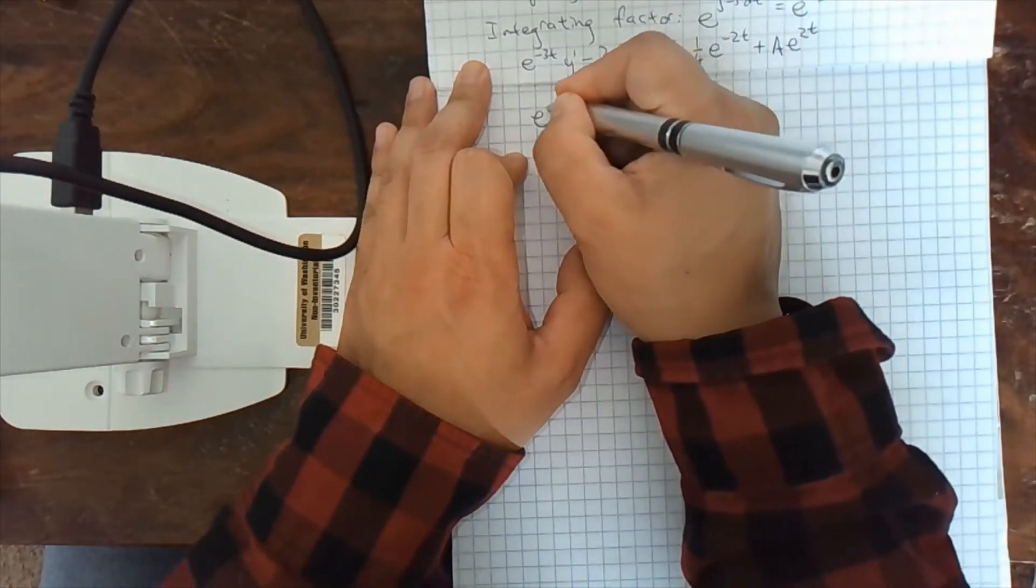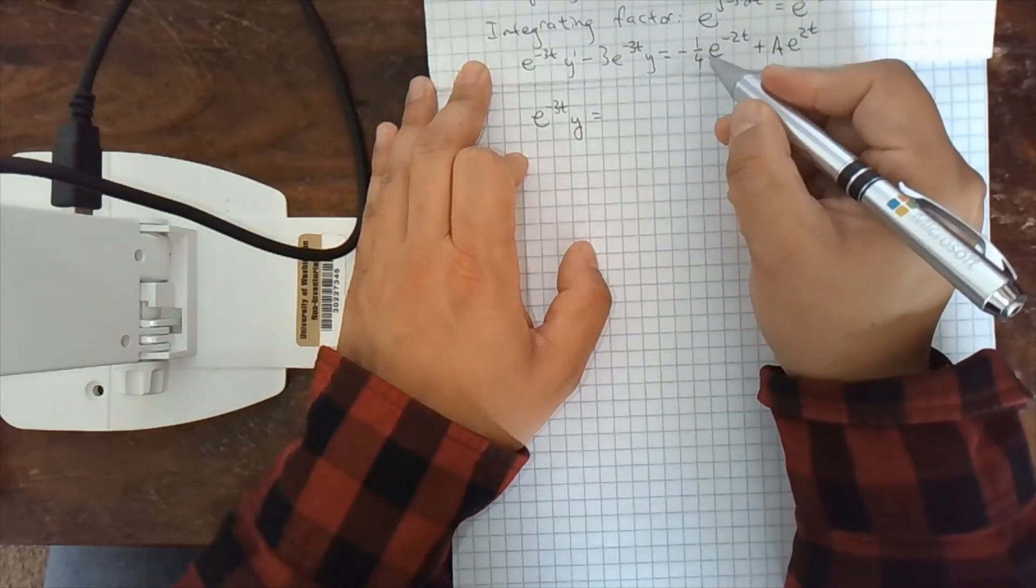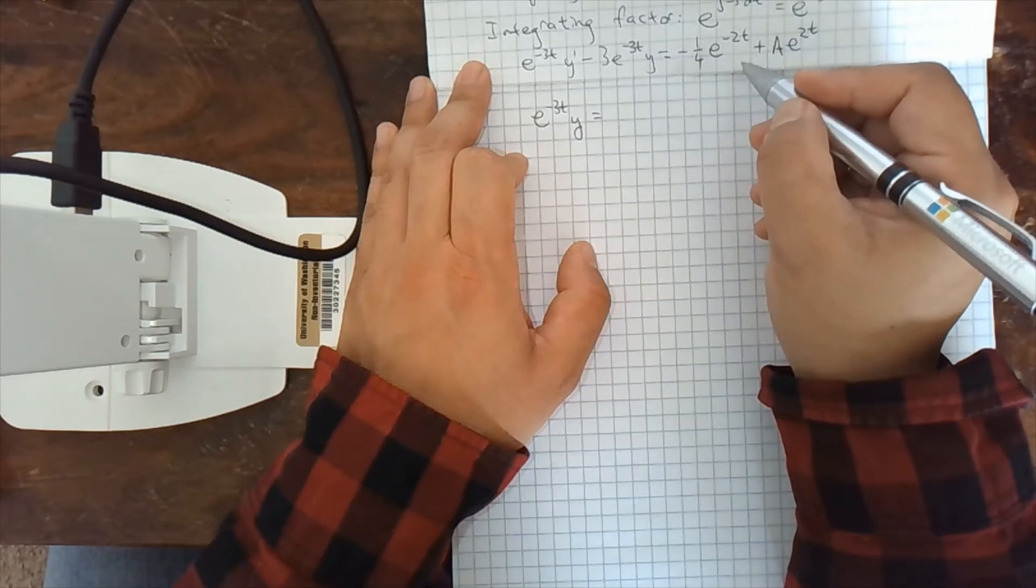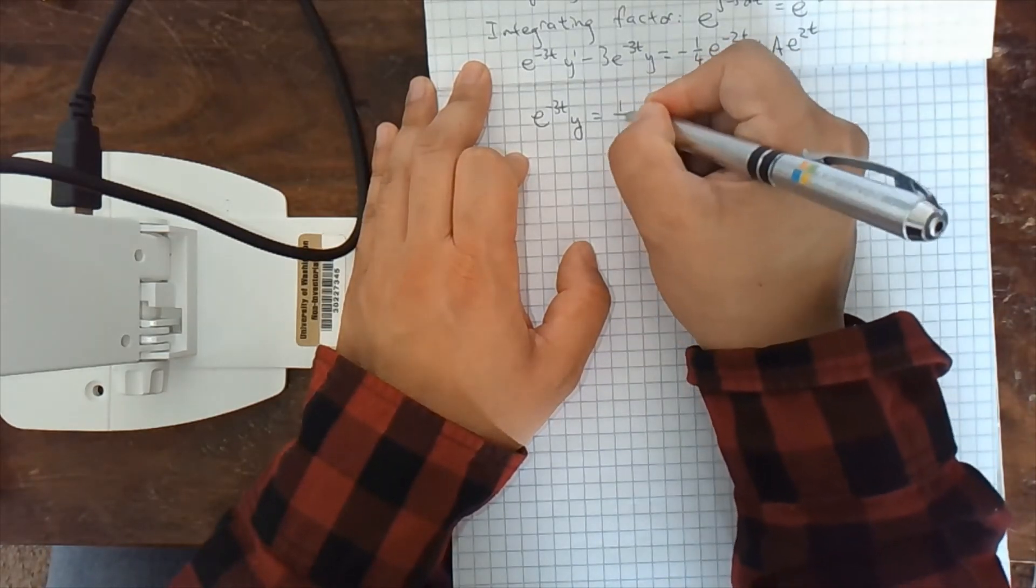So we should see a product rule on this side and we do. This is e to the minus 3t y. And then on the right hand side, integral of this, we need to divide by another negative 2. Right? There's a changeable going on here.